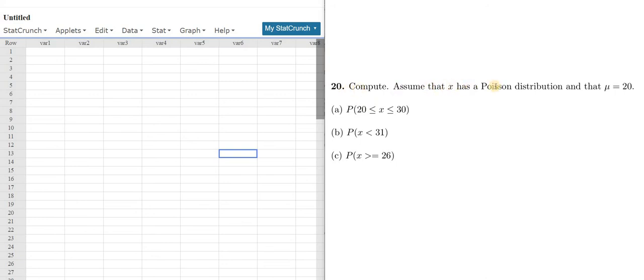So compute. Assume that x has a Poisson distribution and that mu equals 20. So we're going to compute all three of these probabilities.